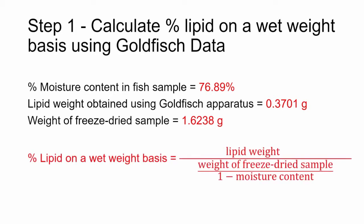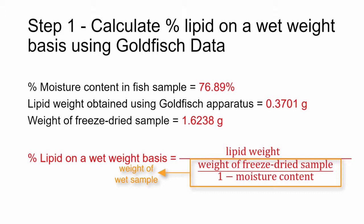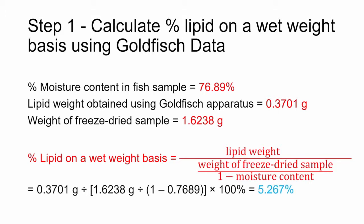The percent lipid on a wet weight basis can be calculated using this equation. On the denominator we have the weight of the freeze-dried sample divided by 1 minus the original wet-based moisture content to calculate the sample's wet weight, and on the numerator we have the lipid weight. Solving the equation indicates that there is 5.267% lipid in the sample on a wet weight basis.